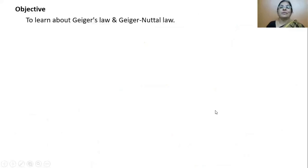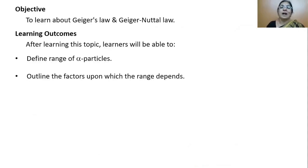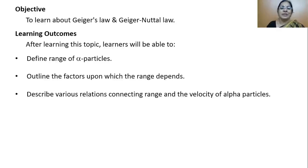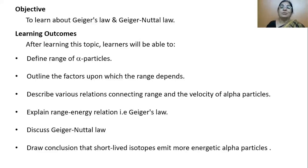The objective of today's topic is to learn about Geiger's law and Geiger-Nuttall law. The learning outcomes will be that after listening to the class, the learners will be able to define the range of alpha particles, outline the factors upon which the range depends, describe various relations connecting range and velocity of alpha particles, explain the range-energy relation that is Geiger's law, discuss Geiger-Nuttall law, and draw a conclusion that short-lived isotopes emit more energetic alpha particles.